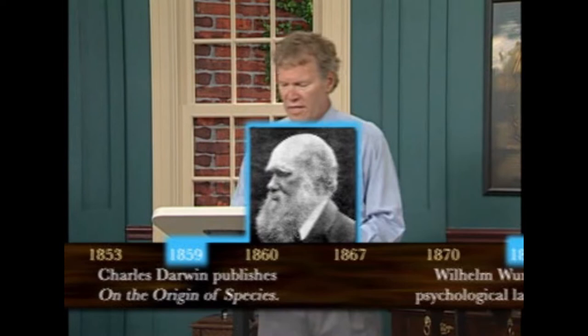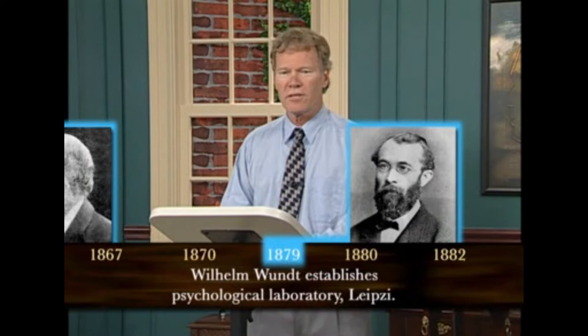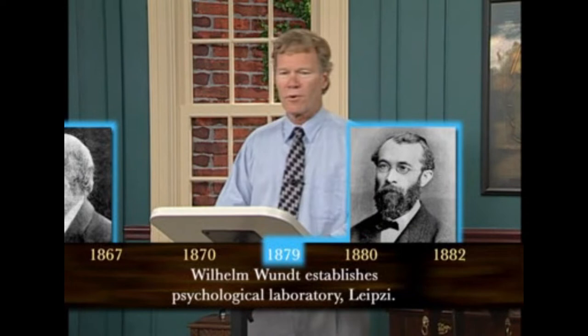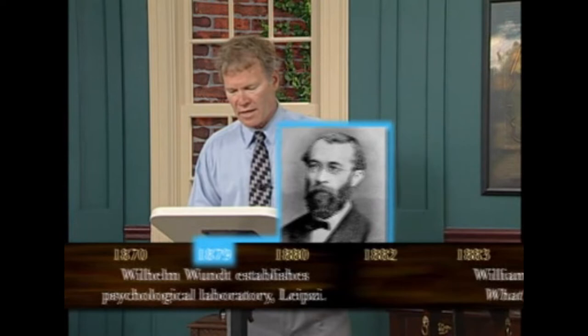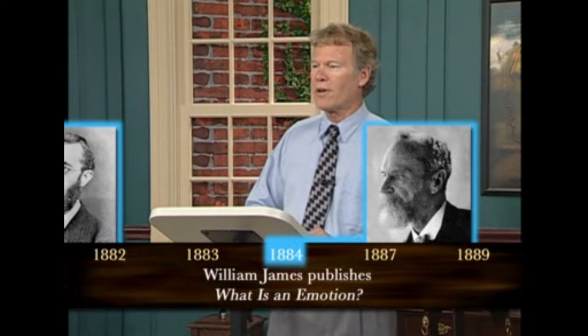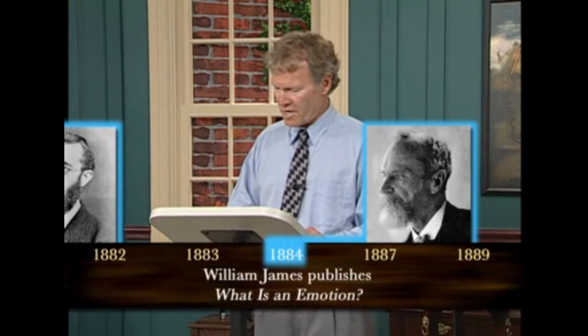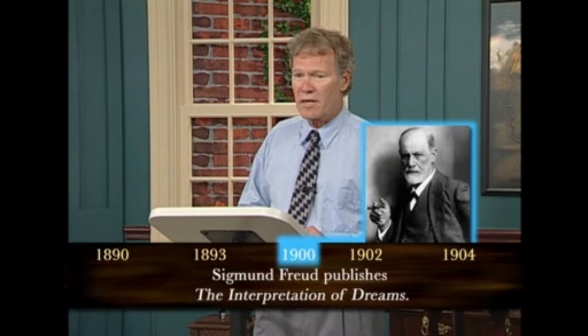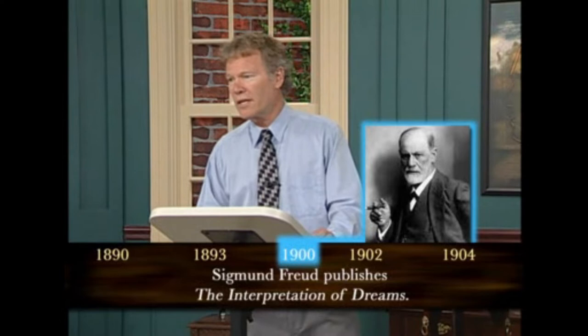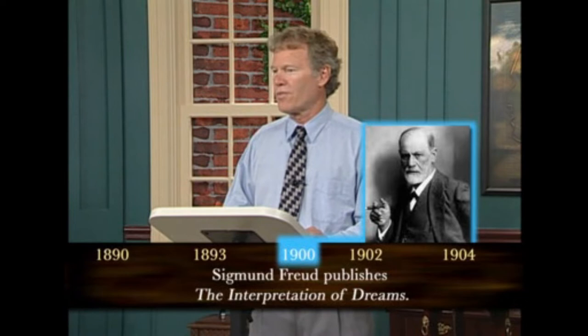Those are the precursors of psychology — all before psychology was identified as a separate field. In the late 1800s, specifically 1879, Wilhelm Wundt established the first psychological laboratory in Leipzig, Germany, and psychologists started to collect data and form a science. William James, while not an empiricist himself, was a great writer who really introduced psychology to America. Around 1900, Sigmund Freud in Vienna introduced psychoanalytic theory and the unconscious mind as an important concept.